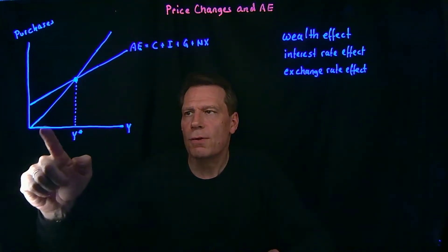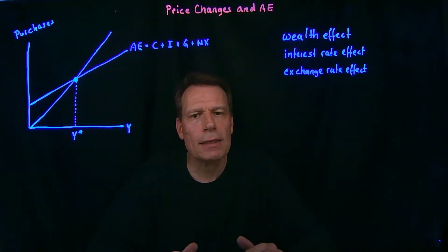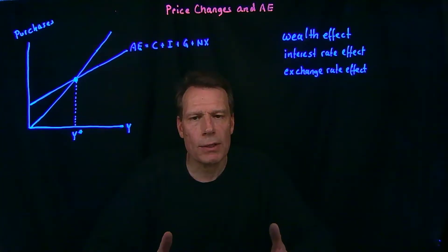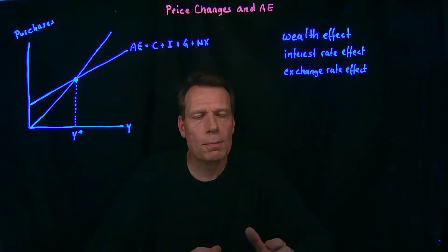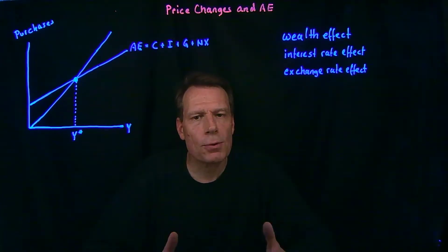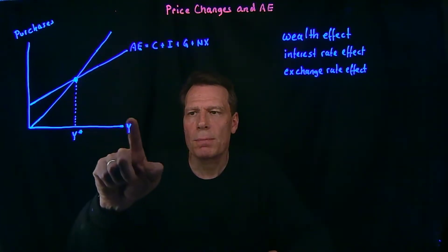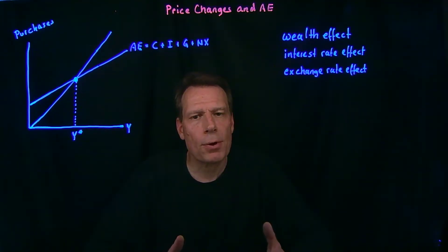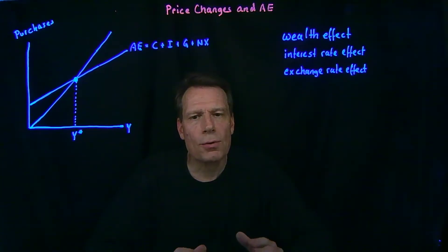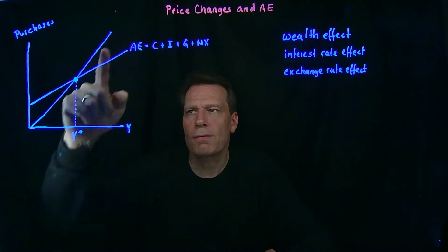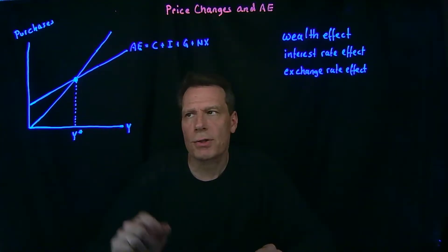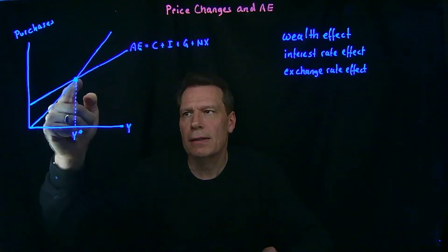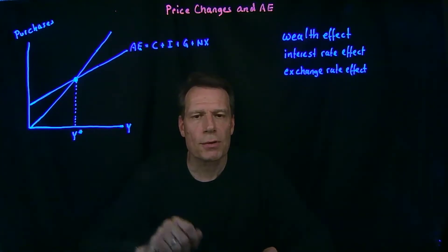The second line is just a 45-degree line, and it emerges from the equilibrium equation that says if output markets are in balance, what's being produced must be equal to what's being purchased. What's being produced is real GDP, which appears on the horizontal axis, and what's being purchased appears on the vertical axis. The only way those two can be equal is if we're on the 45-degree line, so where that line crosses our aggregate expenditure line is where we find the equilibrium level of real GDP.